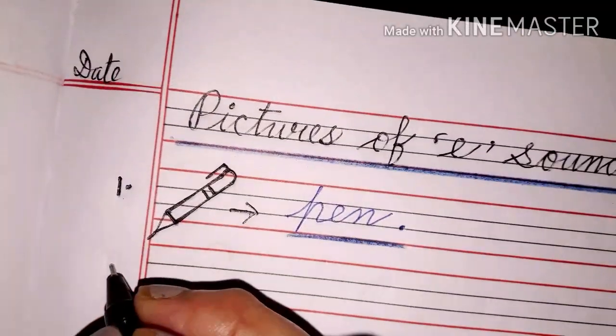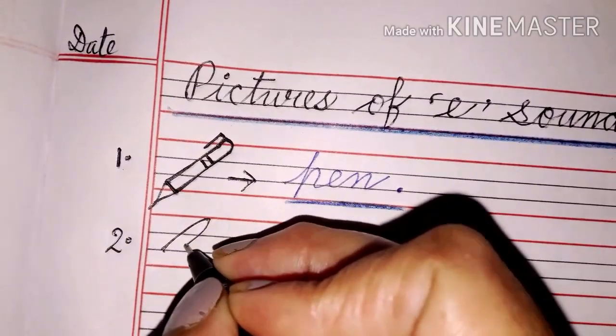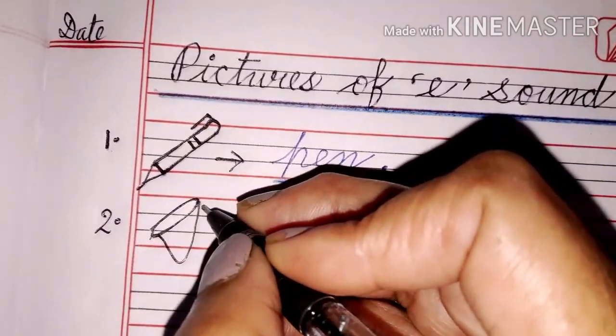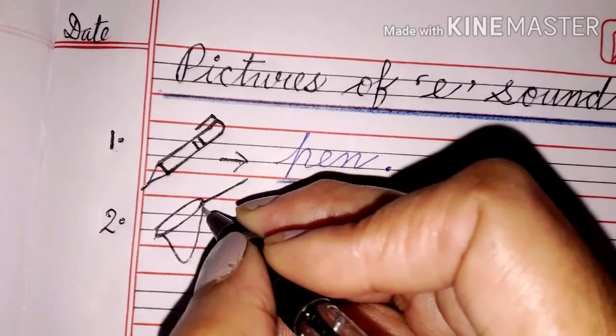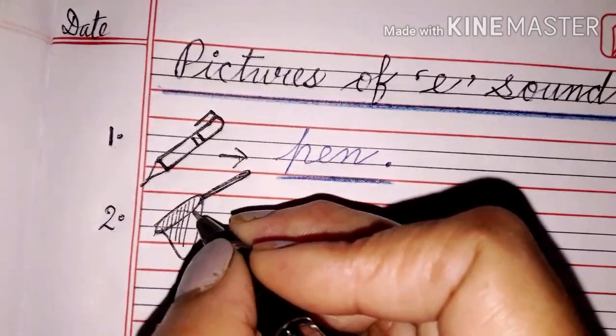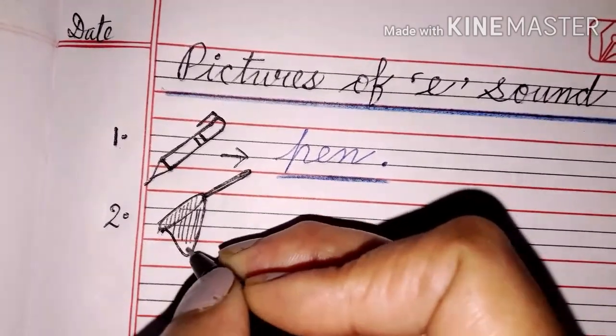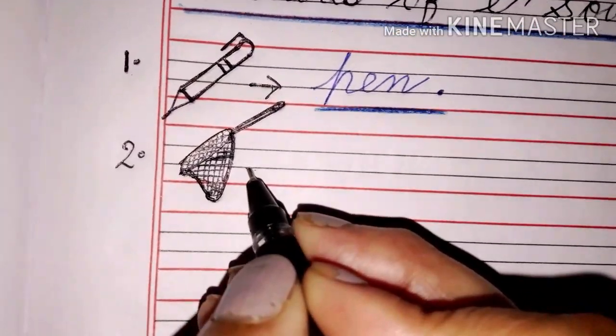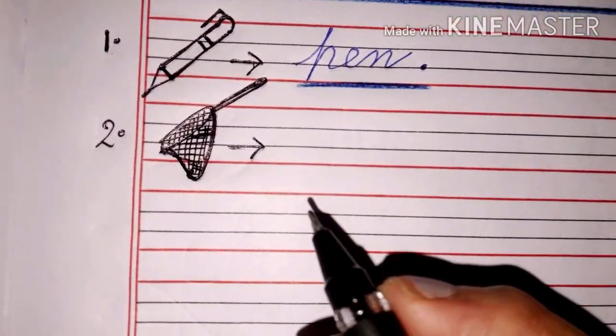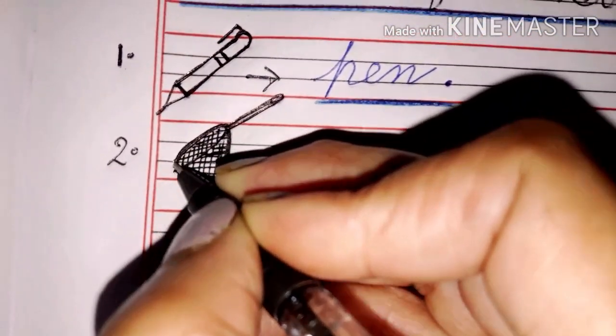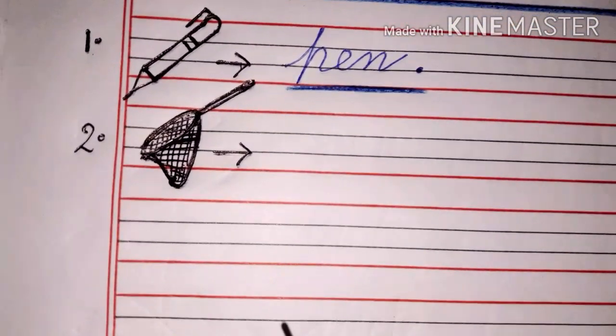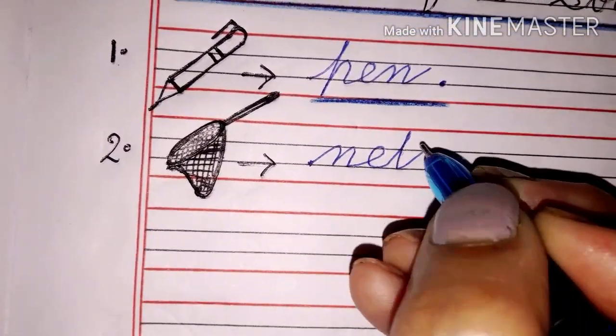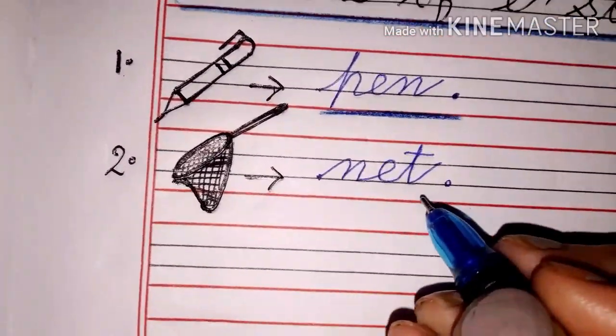Now we will draw the arrow here. Just draw an arrow shape here. Then a slanting V. Make a slanting line. And you have to draw very thin slanting lines here inside this V and arrow shape. This is the picture of a net. I hope you can see it well. N E T net. Now write number three here.